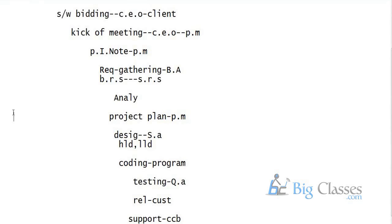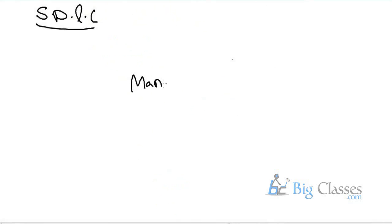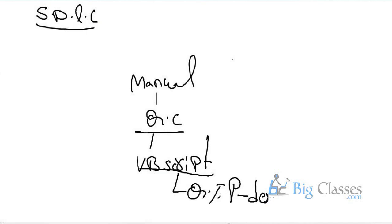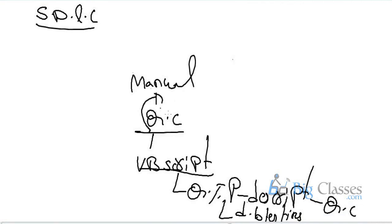The SDLC covered today is basic level — it will be continued in the next class. The course curriculum covers manual testing first, then QC (Quality Center) as a management tool, then VB Script (required for QTP), then QTP focusing on descriptive programming and database testing. Once QTP is 100% complete, QC comes in again for automation. Finally, basic knowledge of Selenium and LoadRunner tools will be discussed.